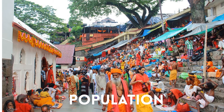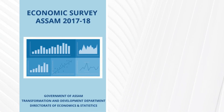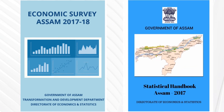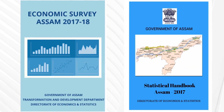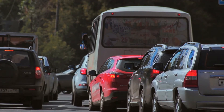Different sectors are covered — manufacturing sectors, industrial sectors, and more. We frame out tables, compile them, and produce two books: the Economic Survey and the Statistical Handbook. The Economic Survey is a reflection of the Assam economy, where every sector is included — electricity, power, transport — everything is reflected there.